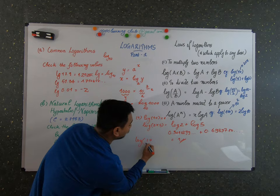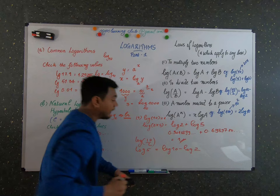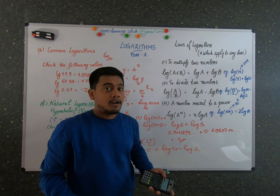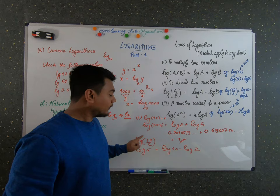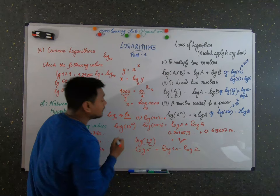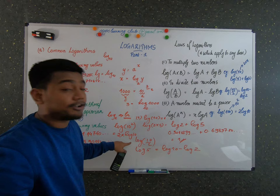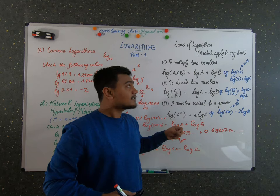To verify division: log of 10 divided by 2 is log 5, which equals log 10 minus log 2. Please find and verify these values using your scientific calculator or a calculator app, and comment your answers below. For the power law: log of 100 equals log of 10 squared equals 2 times log 10. Since log 10 is 1, that gives 2 times 1 equals 2. Checking log 100 on the calculator also gives 2, so the law is verified.